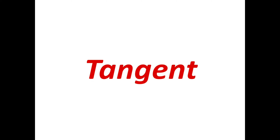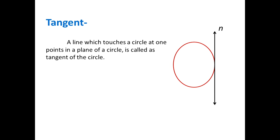Now let's see what is a tangent. Let's have one circle and in the plane of the circle, suppose there is line N which touches the circle at only one point — then line N is the tangent. So we can define a tangent as a line which touches a circle at one point in the plane of a circle. In this figure, line N is the tangent.